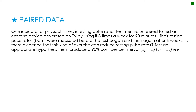Here's a question for you to try. This has to do with pulse rate. Ten men volunteered to test an exercise device by using it three times a week for 20 minutes. Resting pulse rates in beats per minute were measured before the test began and again after six weeks. Is there evidence that this exercise can reduce resting pulse rates? Test an appropriate hypothesis and produce a 90% confidence interval. They gave the order to subtract: after minus before. Press pause, try this question, then press play to see how you did.